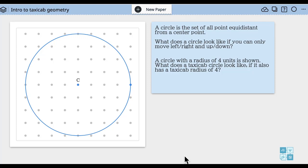This is an introduction to taxicab geometry. In regular geometry, a circle is a set of all points equidistant from a center point. In taxicab geometry, you take the same idea—a center point and all the sets of all points that are equidistant.